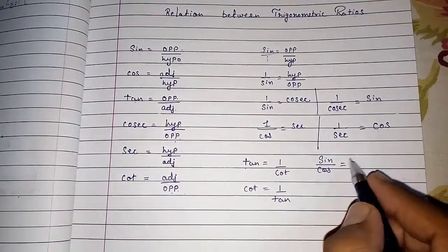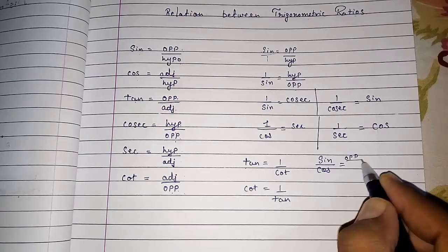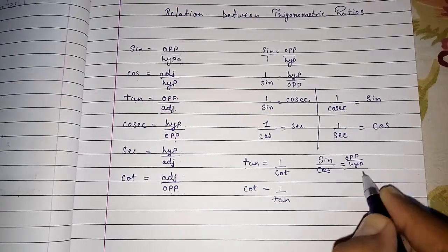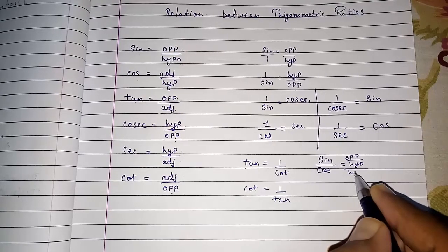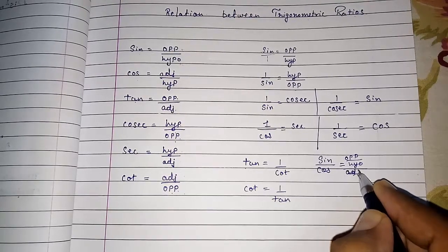Sin is opposite by hypotenuse. Divide by cos which is adjacent by hypotenuse.